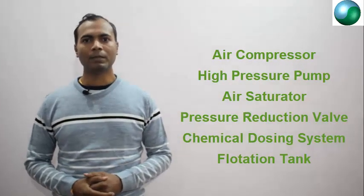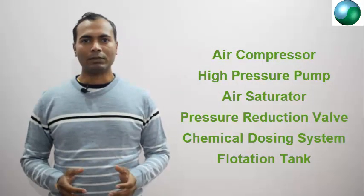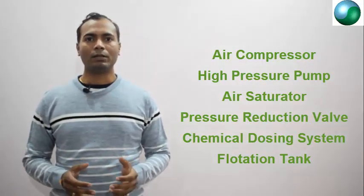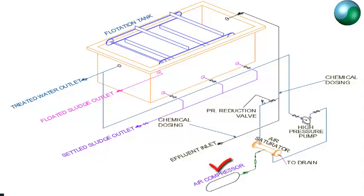Air compressor, high pressure pump, air saturator, pressure reduction valve, chemical dosing systems, and flotation tank. Now let's see all these components in detail through this diagram. Air compressor is required to get the continuous supply of air at the required pressure.